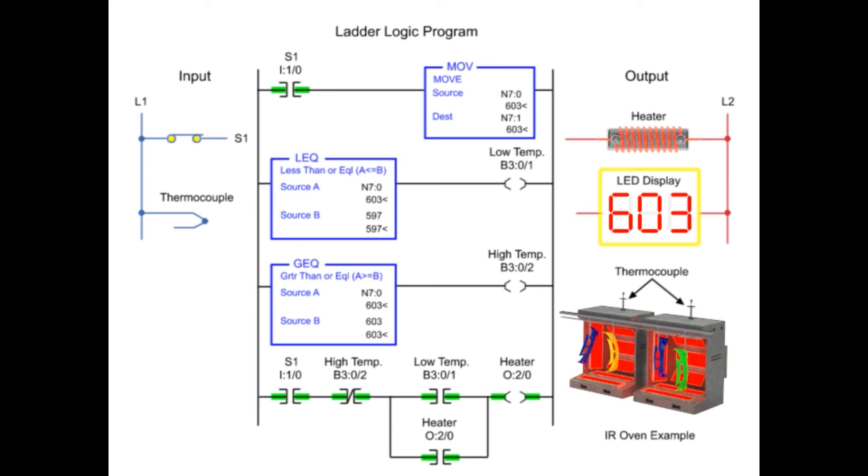Reaching 603 degrees or more, the high temp output is enabled since source A is equal to source B of the greater than equal to instruction. When the high temp output is true, the heater turns off and remains off until the temperature reaches 597 or lower.